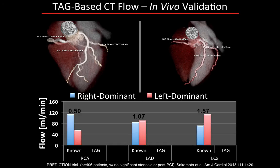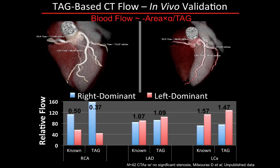This is precisely what we did for a first-level validation of this underlying physical principle. We looked at right and left dominant circulation, where we know from large trials what the average flow down each main coronary artery is. We then took a small number of CTs and looked at what relative flows they give using this approach, and found fairly relevant numbers that follow the expected patterns of relative flows.